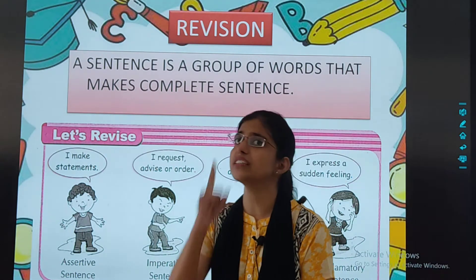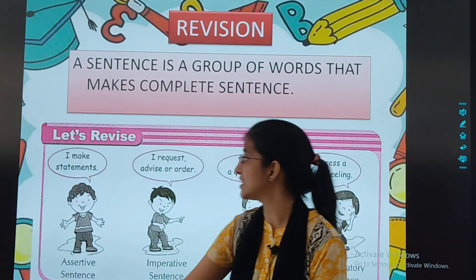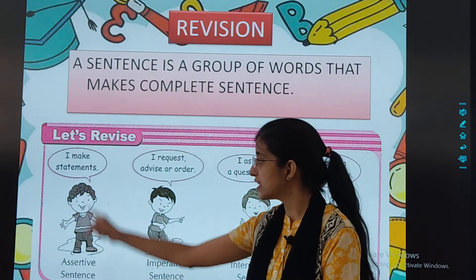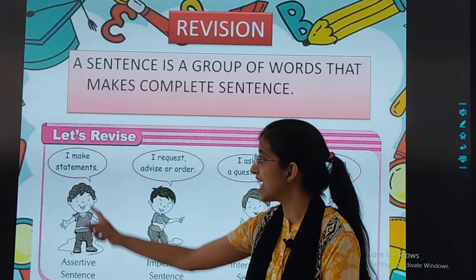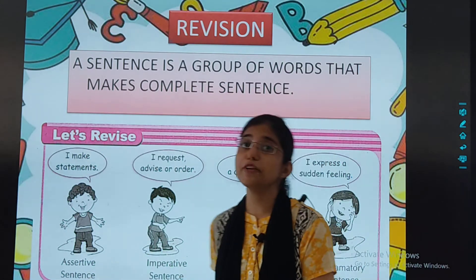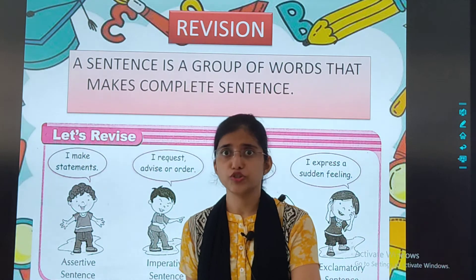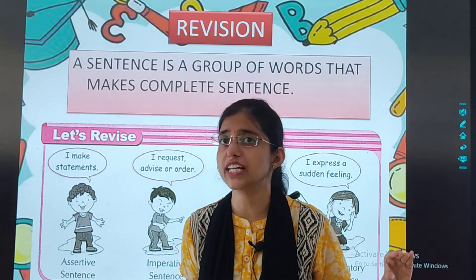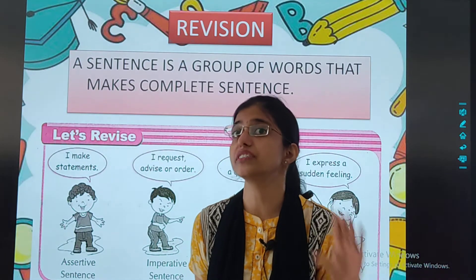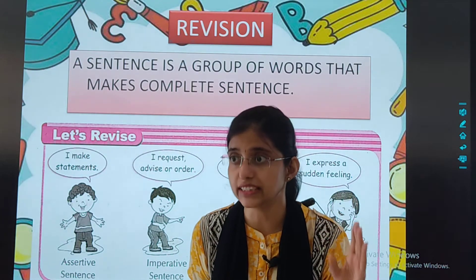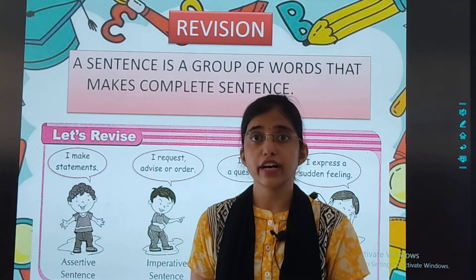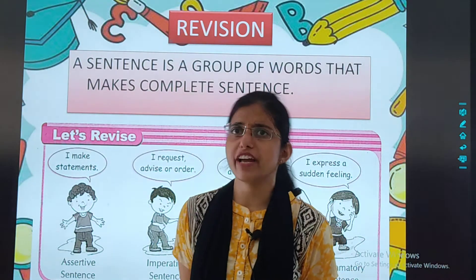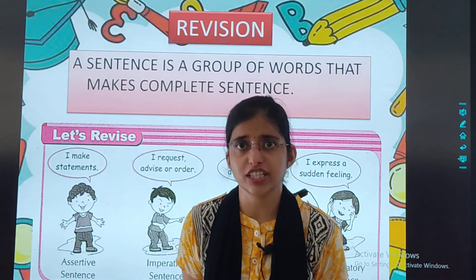The first type is the assertive sentence. What does an assertive sentence tell? It makes statements. All statements are assertive sentences. For example, Rhea is a very intelligent girl.